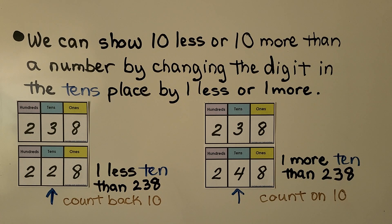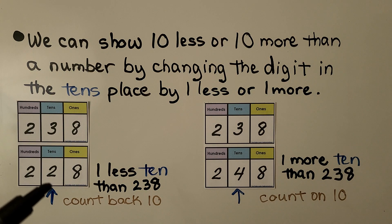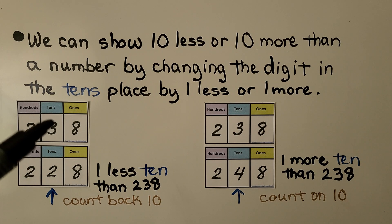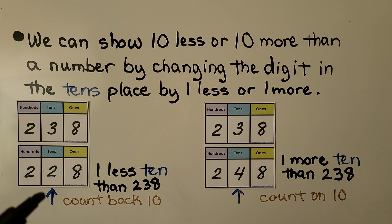We can show 10 less or 10 more than a number by changing the digit in the tens place by one less or one more. We have the number 238. This is the tens place. 10 less would be one less 10 than 238 — that would be counting back 10. We would have 228. That's one less than 3, so we have a 2 in the tens place.